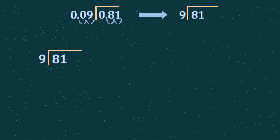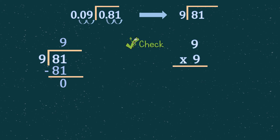Here is another example. As we can see here, since we need to move the decimal point twice in the divisor to make 0.09 a whole number, therefore we also need to move the decimal point in the dividend twice.